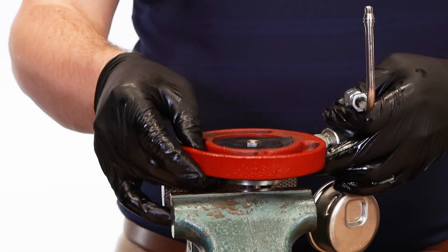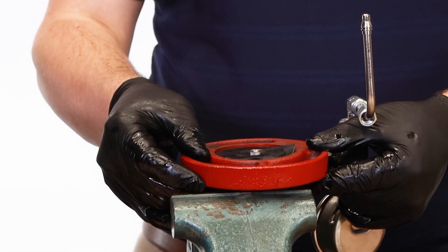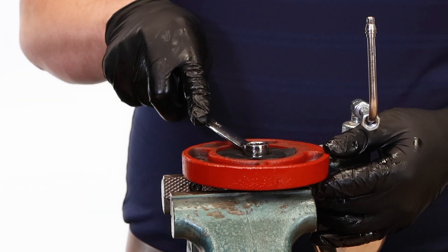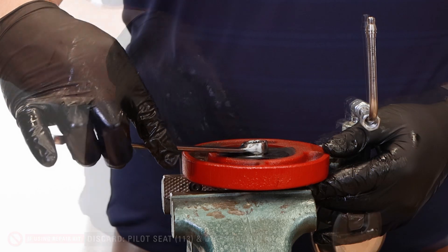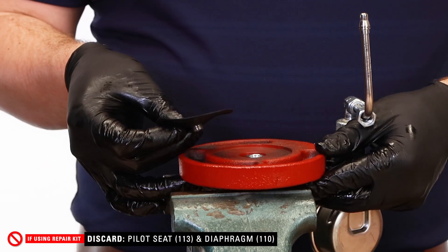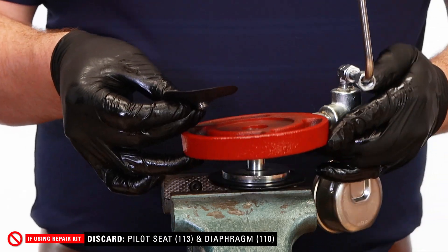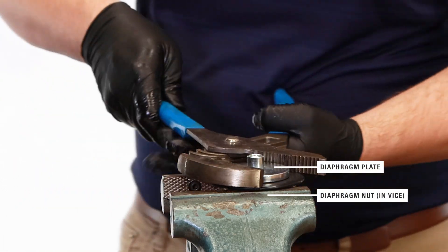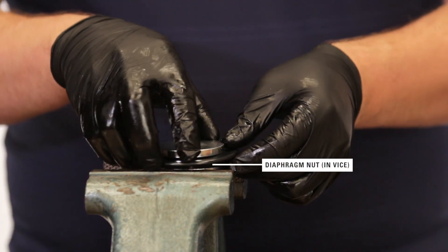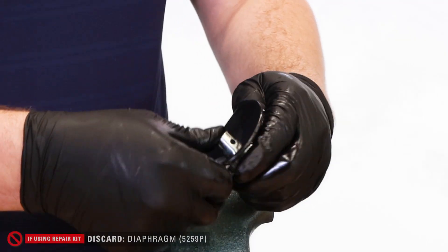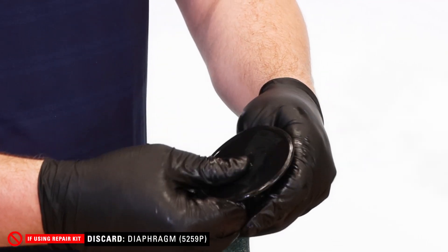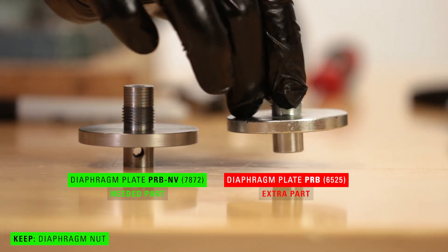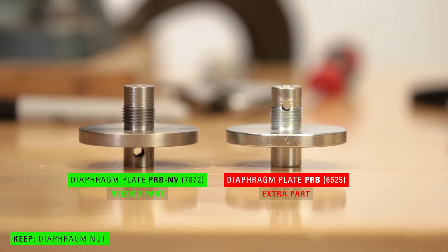Place the pilot housing upside down in the vise on the diaphragm plate. Use a wrench to remove the pilot seat. Inspect the diaphragm and replace it if necessary. Use channel locks to remove the diaphragm nut from the diaphragm plate. Remove and inspect the diaphragm and replace it if necessary. Keep the diaphragm nut, but set the diaphragm plate aside. It will be an extra piece.